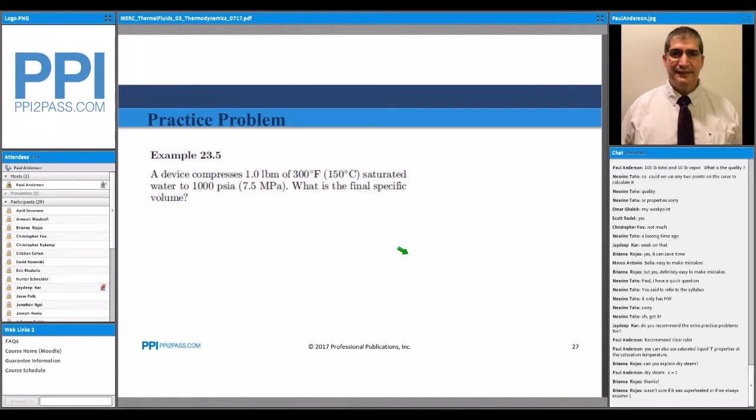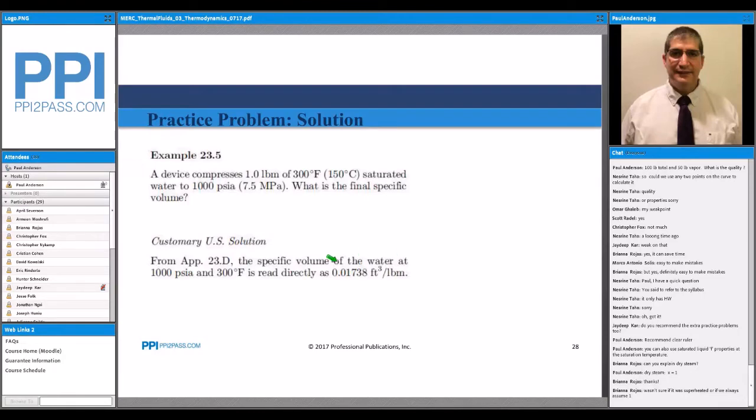First practice problem here. A device compresses one pound of 30 degrees F saturated water to 1,000 PSI. What is the final specific volume? So going back to that appendix, the compressed liquid tables at 1,000 PSI and 300 degrees, we can get that specific volume of 0.0173.